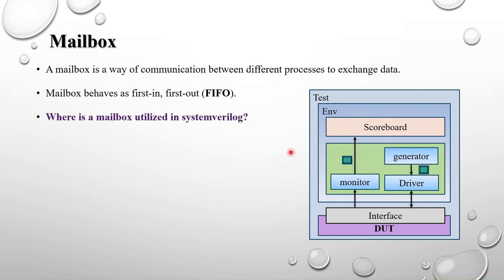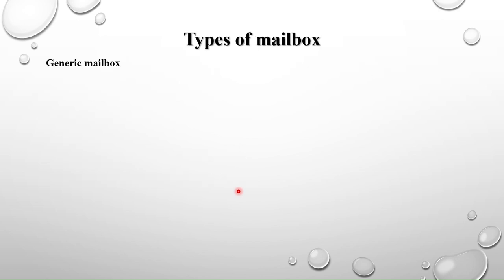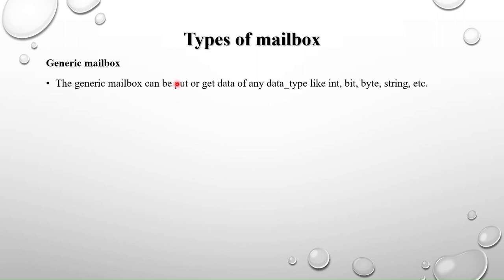In mailbox we have mainly two types: generic mailbox and parameterized mailbox. Each of these is further categorized into two types: bounded mailbox and unbounded mailbox. If the size is defined in the mailbox then it is called a bounded mailbox, and if the size is not defined then it is called an unbounded mailbox. Both generic and parameterized mailboxes can be either bounded or unbounded.